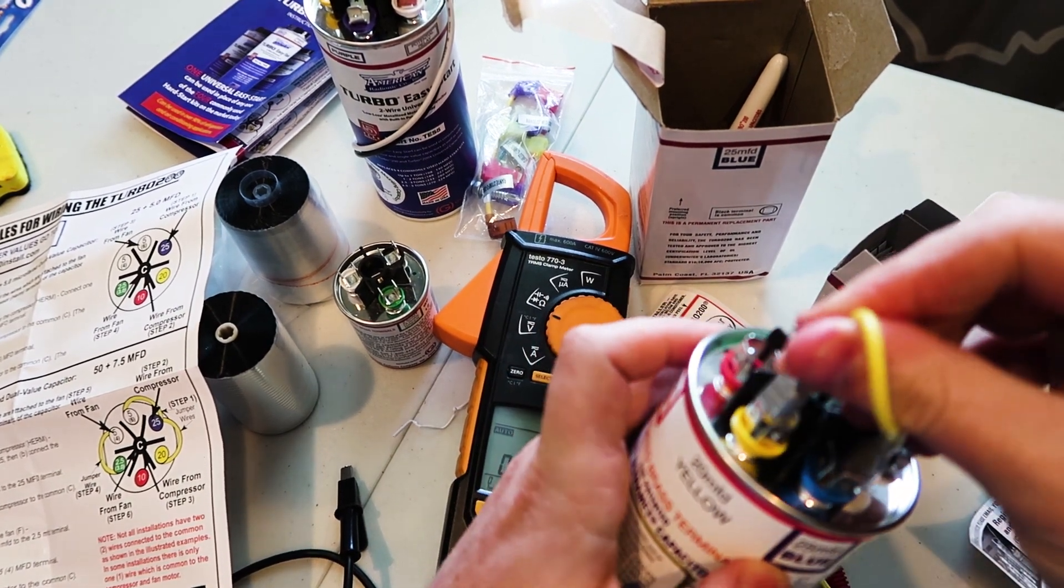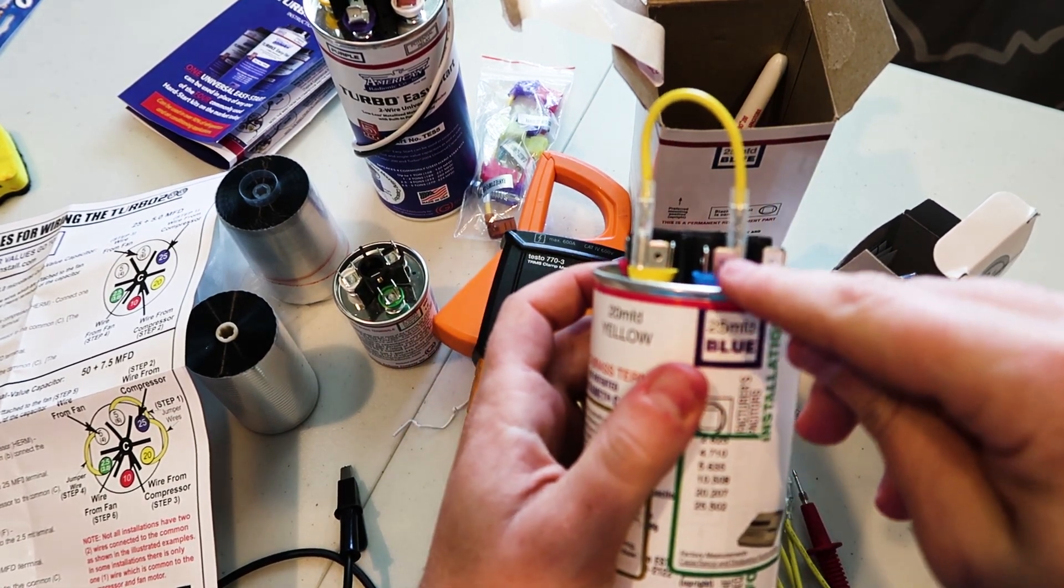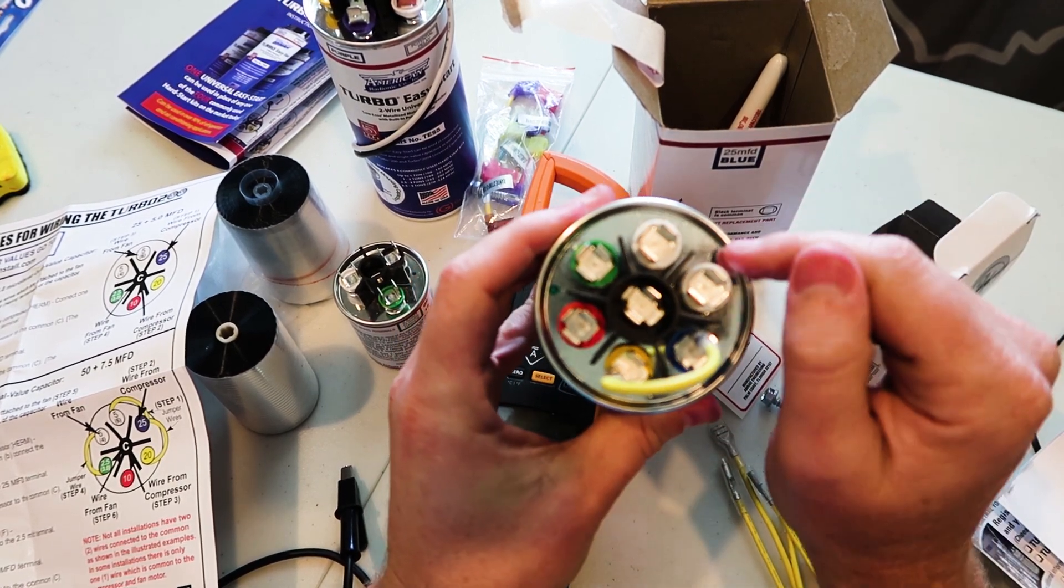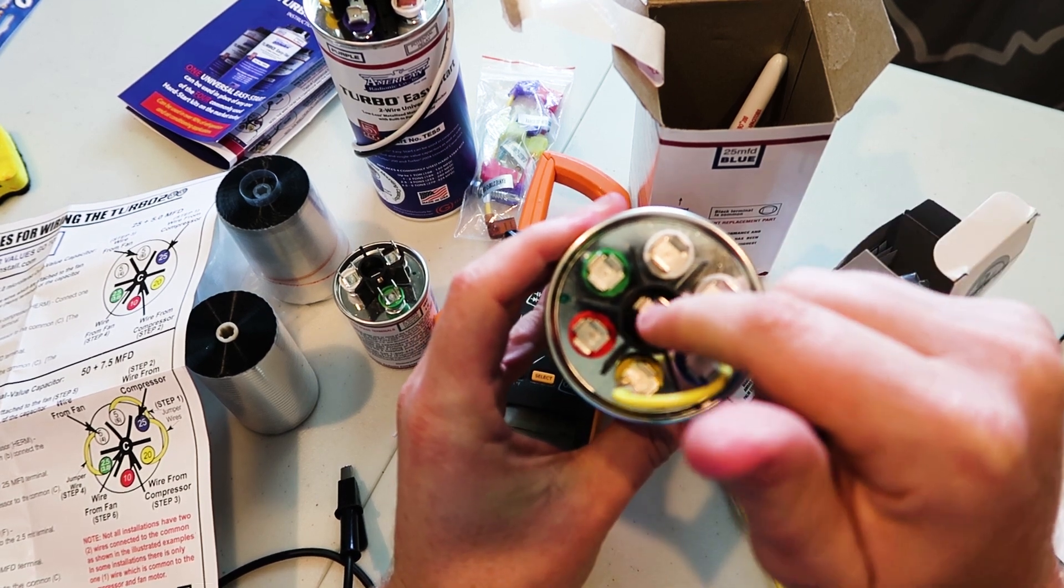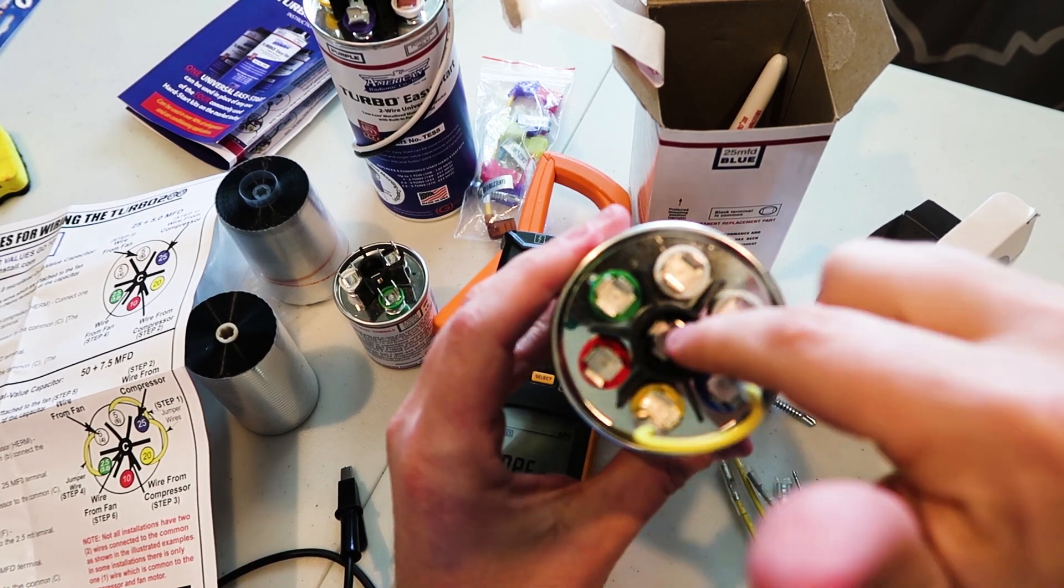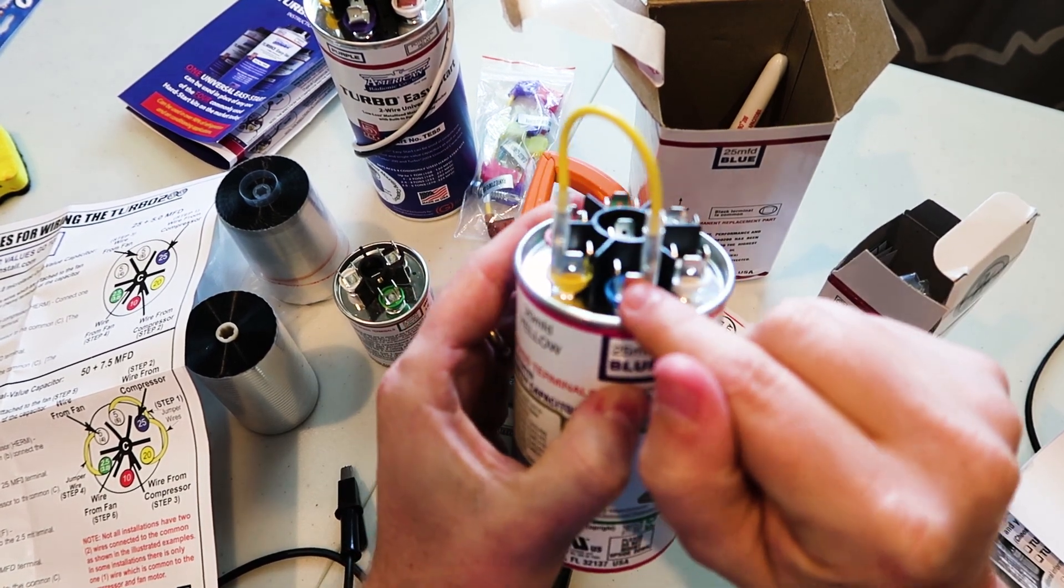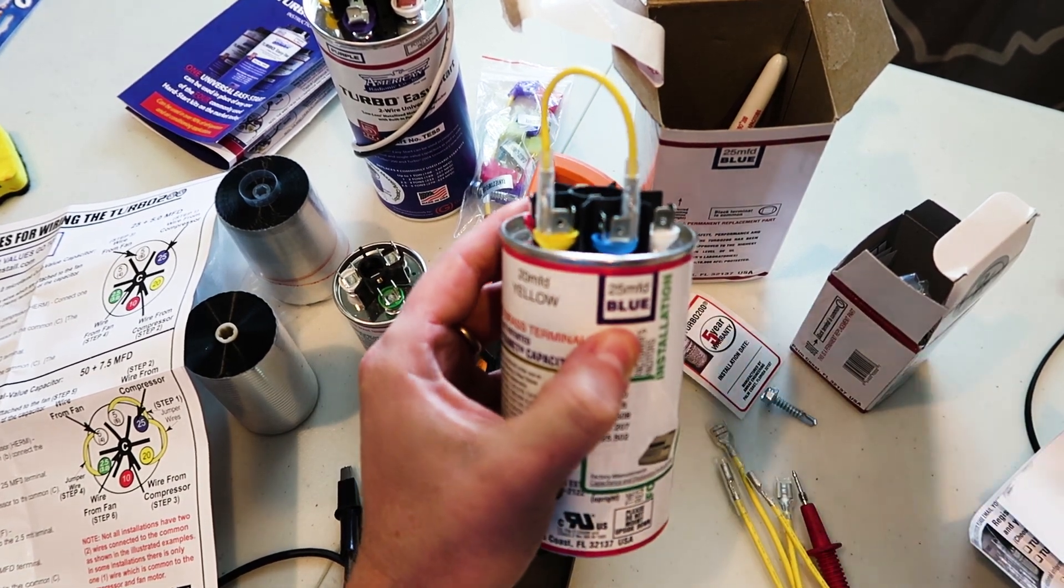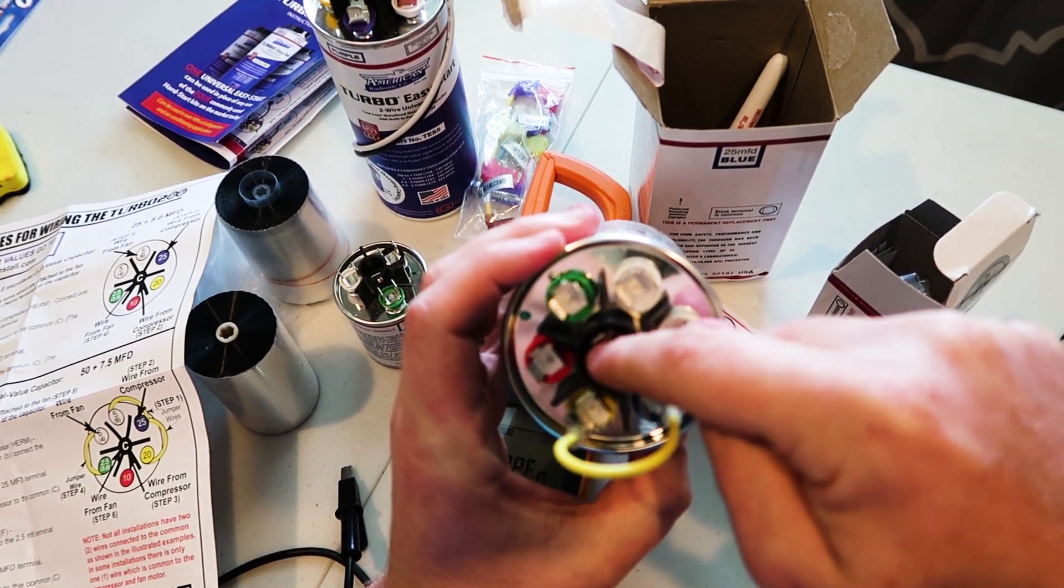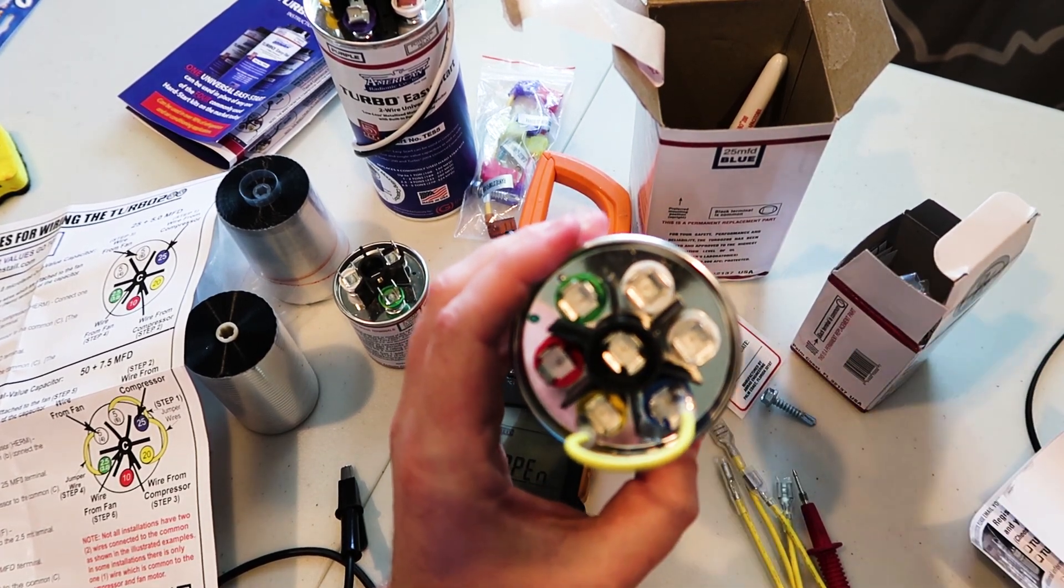So if I connected this to this, the 20 to the 25, now I've got a 45 microfarad capacitor, and I would connect my compressor to this terminal right here, and then common to this terminal here. Remember, when we say common, we're not saying common to the compressor. We're saying this is the common point that goes back to the run side of the contactor. I can't tell you how many times I've had to tell people that. They always get confused because they think this goes to the C terminal on the compressor. This does not go to the C terminal on the compressor.